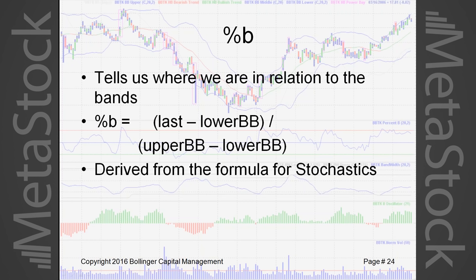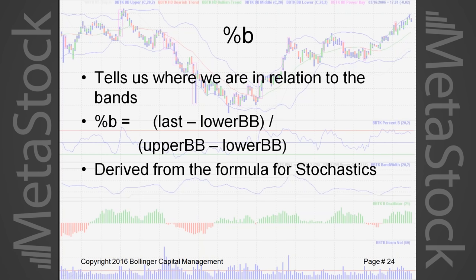Percent B tells us where we are in relation to the Bollinger Bands. It's derived directly from the formula for stochastics, which I learned from George Lane. The formula is: last price minus the lower Bollinger Band, divided by the upper Bollinger Band minus the lower Bollinger Band. These are all programmed for you in the toolkit, so you don't need to do this math — but I know many people like to understand what's behind the tools they're using.